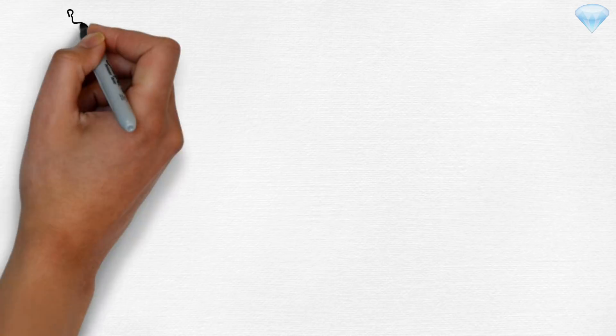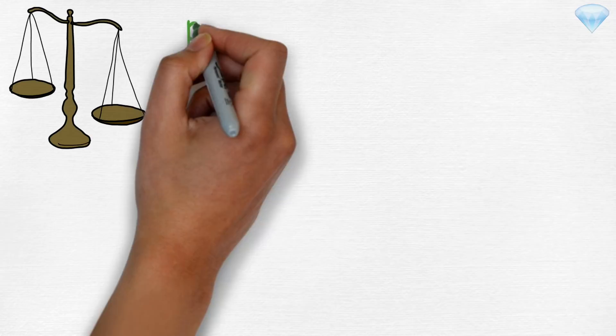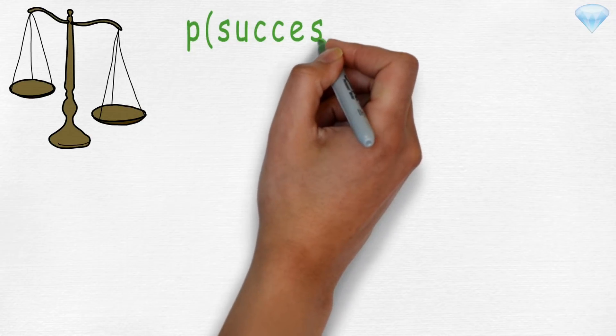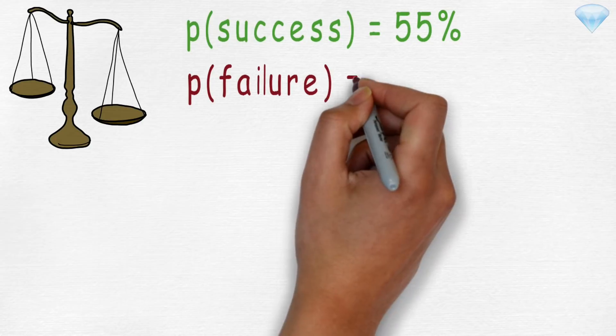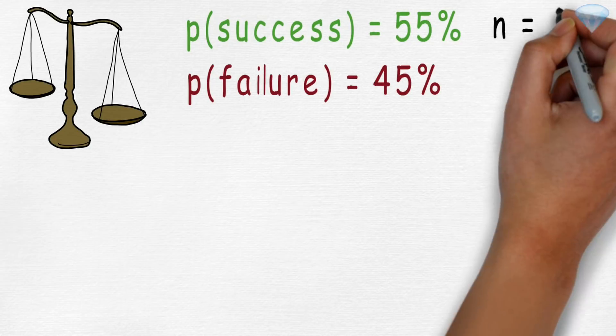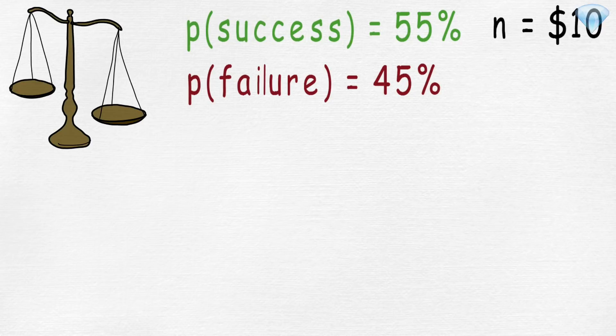Now suppose by some magic somehow we can tilt the odds on our side. Let's say probability of success equals 55% while probability of failure is 45%. If we start with n dollars and we want to double our money, then t equals 20 dollars.